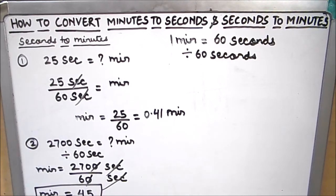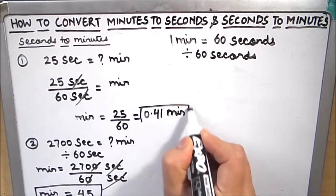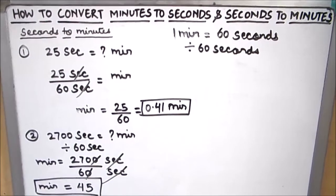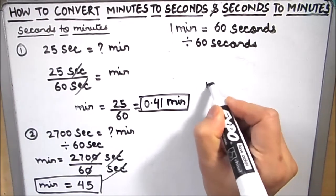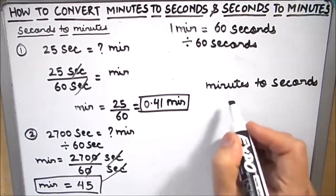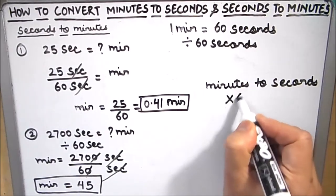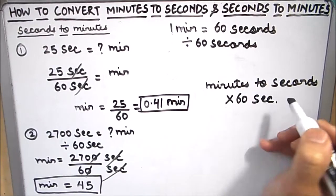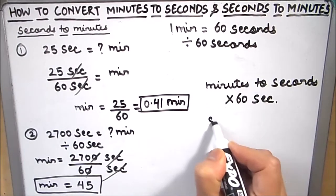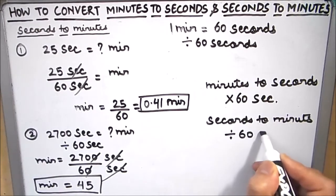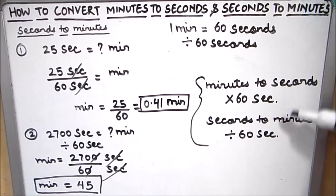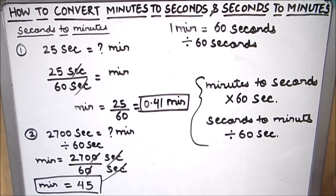So in this video we have learnt that for converting from minutes to seconds we multiply by 60, and for converting from seconds to minutes we divide by 60. If you keep these two things in mind you will be able to convert any minutes to seconds problem. I hope this is helpful to you. Thanks for watching.